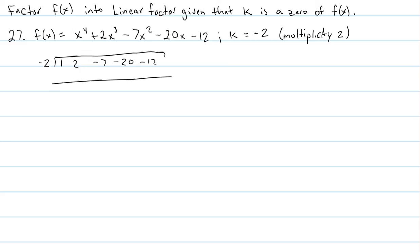So, we're going to drop down the 1 to begin. Then, we're going to multiply the negative 2 and the 1. We get a negative 2. We add them, we get a 0. 0 times negative 2 is 0. Then, we drop the negative 7. Negative 2 times negative 7 is 14. When we add them, we get negative 6. Negative 2 times negative 6 is positive 12. We get 0.